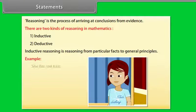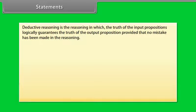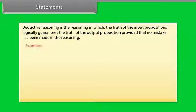Example of inductive reasoning: She has red hair, therefore she has a temper. Deductive reasoning is the reasoning in which the truth of the input propositions logically guarantees the truth of the output proposition, provided that no mistake has been made in the reasoning.